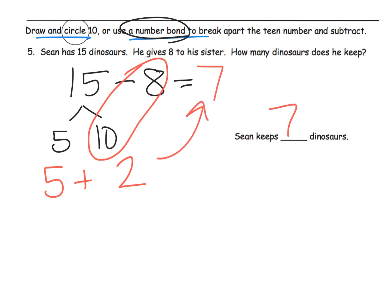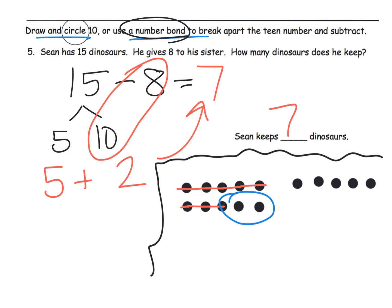Woohoo! So Sean keeps 7 dinosaurs. Now if we wanted to draw that picture, what our picture would look like is, well, we would model 15. So there's my model of 15. And then because it says subtract 8, we're going to cross off 8. And so what's our answer? Our answer is these 2 plus the original 5. So the answer is 7. 2 plus 5 equals 7.